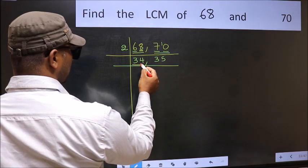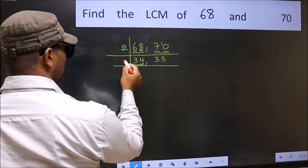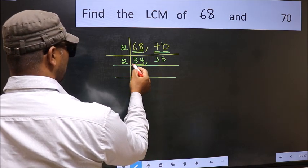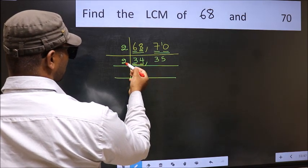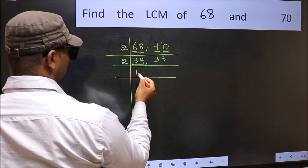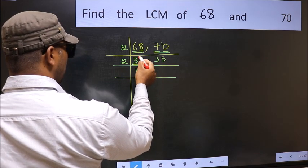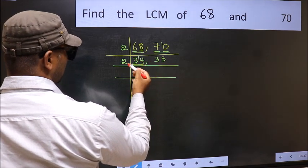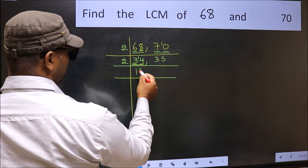Now in this number, last digit 4, so take 2. First number 3, a number close to 3 in 2 table is 2 times 1 is 2. 3 minus 2 is 1, 1 carried forward makes 14. When do we get 14 in 2 table? 2 times 7 is 14.